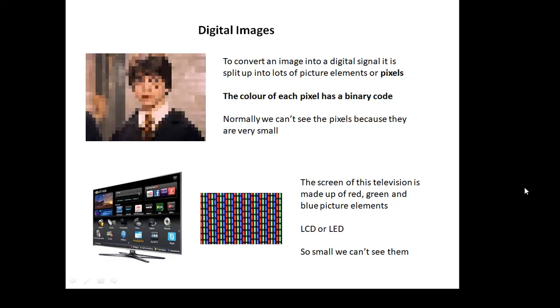Digital images. How do you change a picture into digital? Well, what you do is you split the picture up into lots of picture elements or pixels. And then the color of each pixel has a binary code. Normally, we can't see pixels because they're very small. The idea is that they are so small that you can't see individual pixels. If they were too big, then the image would look pixelated as this Harry Potter thing does now.